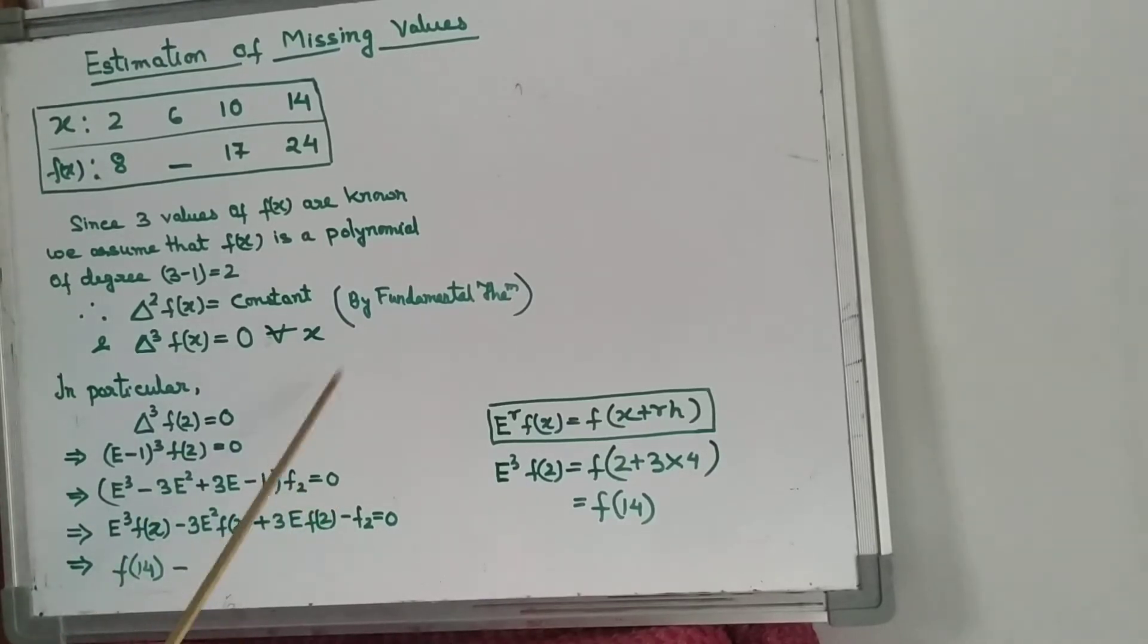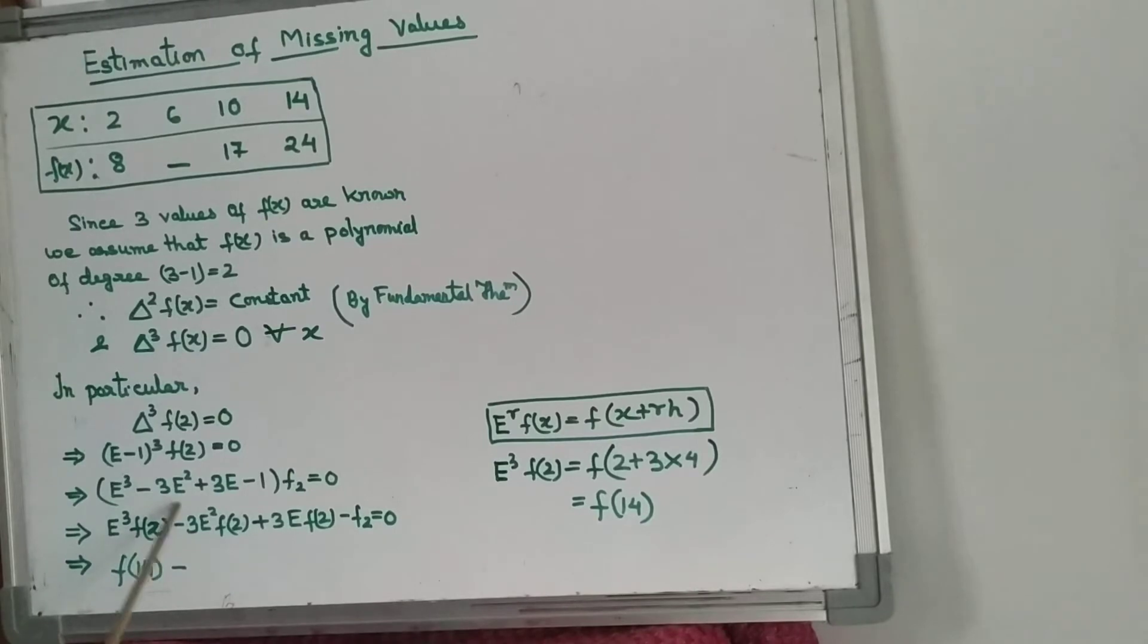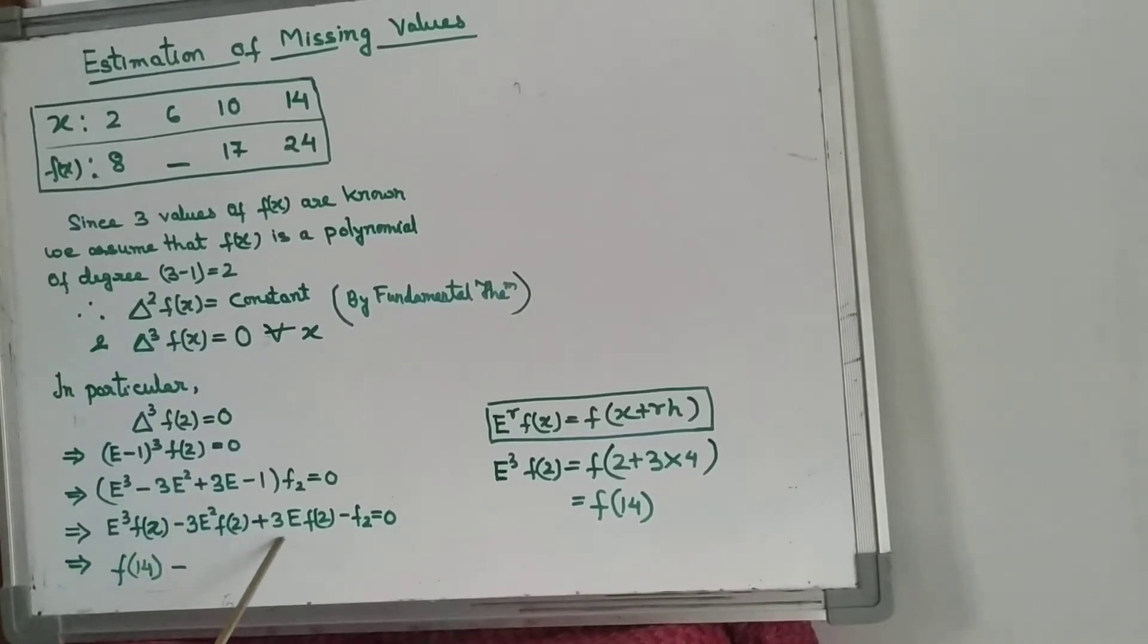Now open these two brackets. Then it will be E^3 f(2) minus 3E^2 f(2) plus 3E f(2) minus f(2) is equal to 0.